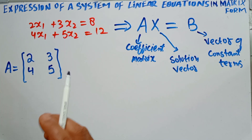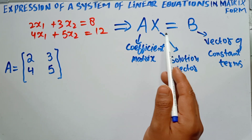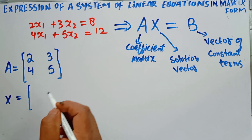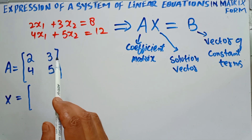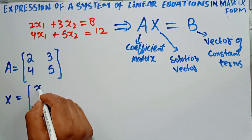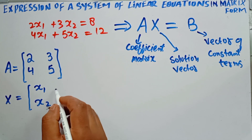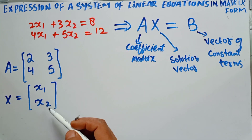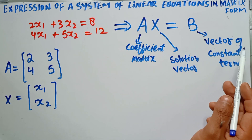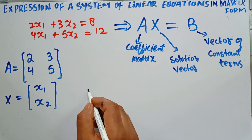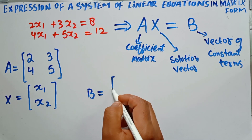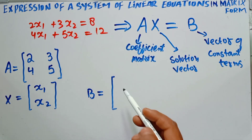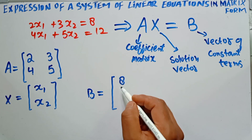Now X is the solution vector — in X we take the column vector of x1 and x2. Similarly, B is the vector of constant terms. The constant terms here are 8 and 12, so B is the vector containing 8 and 12.